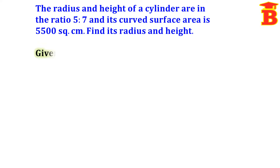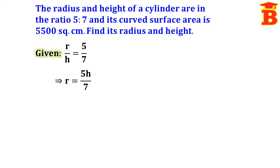Given the ratio R to H equals 5 to 7. We can write R by H equal to 5 by 7. Cross-multiplying, we get R equal to 5H by 7.